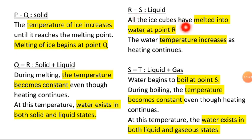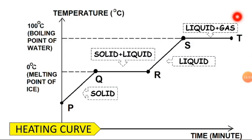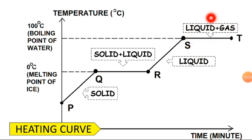R to S is liquid — all the ice has melted into water at point R, and the water temperature increases as heating continues. S to T is liquid and gas — water begins to boil at point S. During boiling, the temperature becomes constant even though heating continues; at this temperature, water exists in both liquid and gas state. The graph is constant at Q–R and S–T because the particles need to gain more energy to break the force of attraction between them.